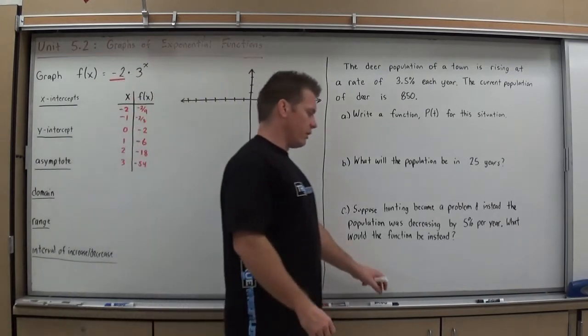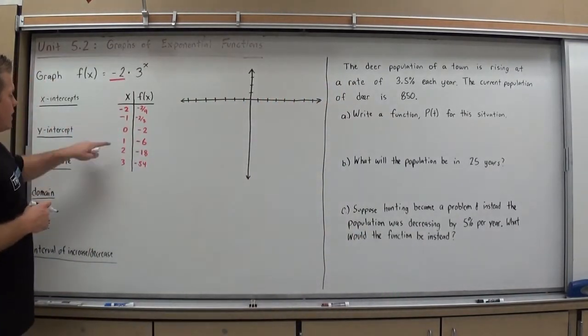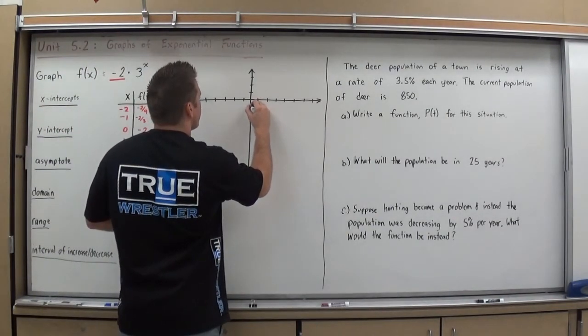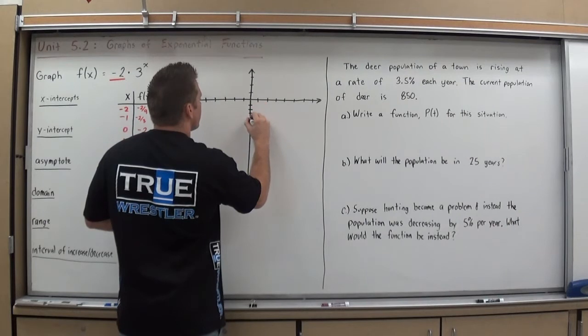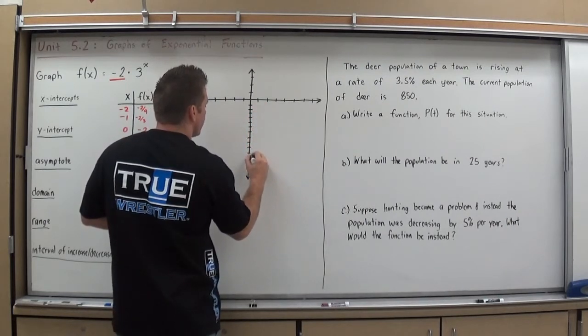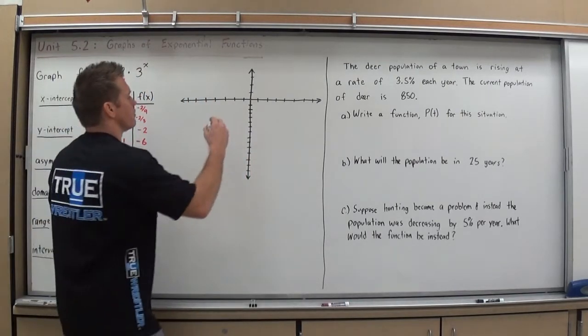And we're already getting fairly large here, so I think I'm going to stop there and start to draw my graph. I'll need to scale it a little bit, but at least I have the basic points. So, I need to go at least down to, let's say, 60. So, I'm going to go by 5's: 5, 10, 15, 20, 25, 30, 35, 40, 45, 50, 55, 60, 65, 70, just to be sure. So, my scale is going by 5's.